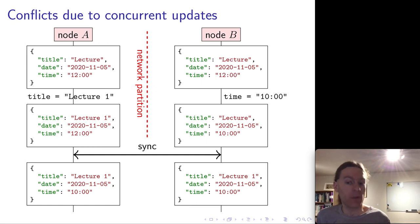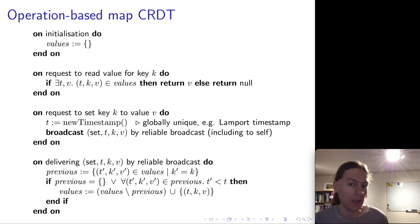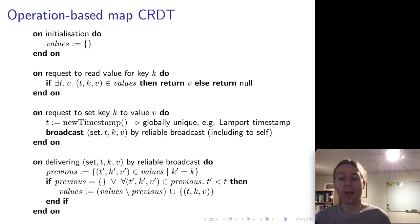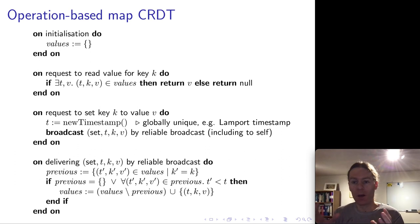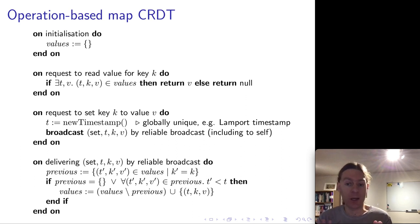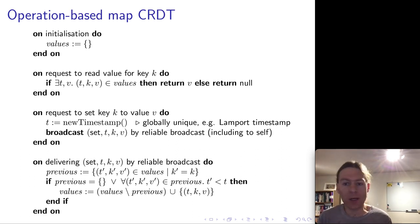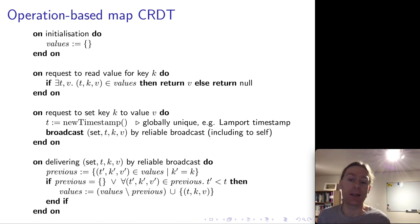Let's look at some algorithms that can achieve this. Conflict-free replicated data types or CRDTs are one option, and this is an example of what is called an operation-based CRDT. The data model is a map — just like a map object in Java — mapping keys to values. Keys and values are not further interpreted; they could be strings or numbers. The only property we want to ensure is that for a given key, there is exactly one value, and we can achieve this using the last writer wins approach.